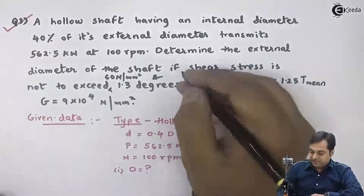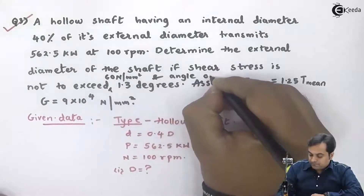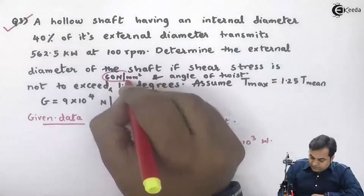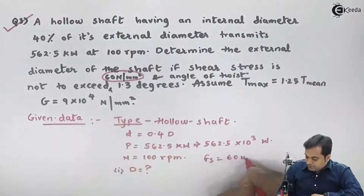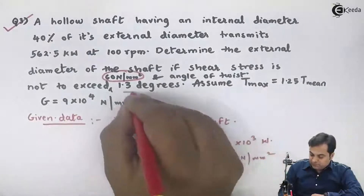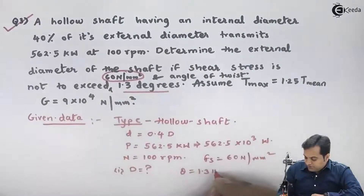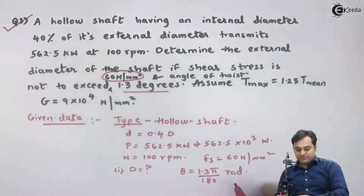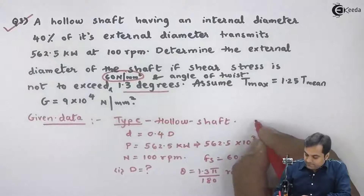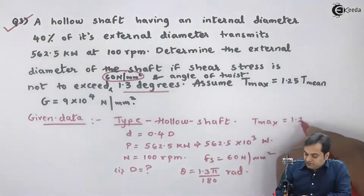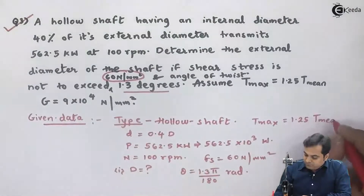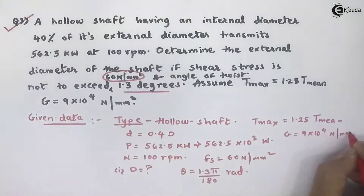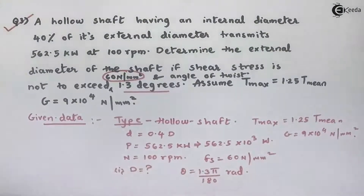This 1.3 degree is the angle of twist. So here, f_s is equal to 60 newton per mm². Angle of twist theta is 1.3 × π/180 radians, because we want the value of theta in terms of radians. T_max is given as 1.25 times T_mean, and modulus of rigidity G is 9 × 10^4 newton per mm². This is the data in front of us.